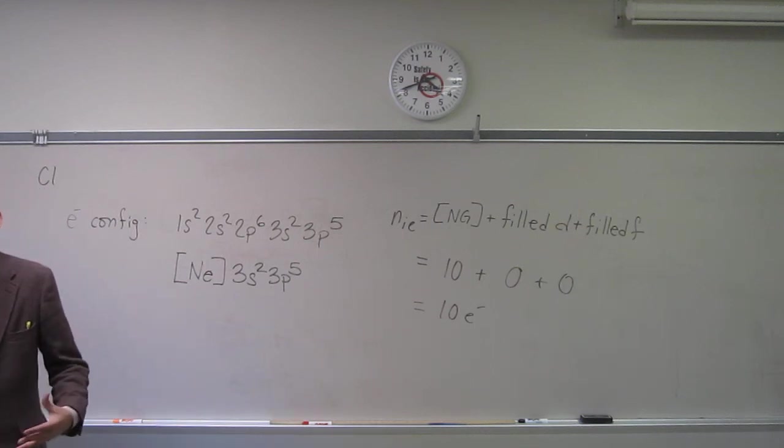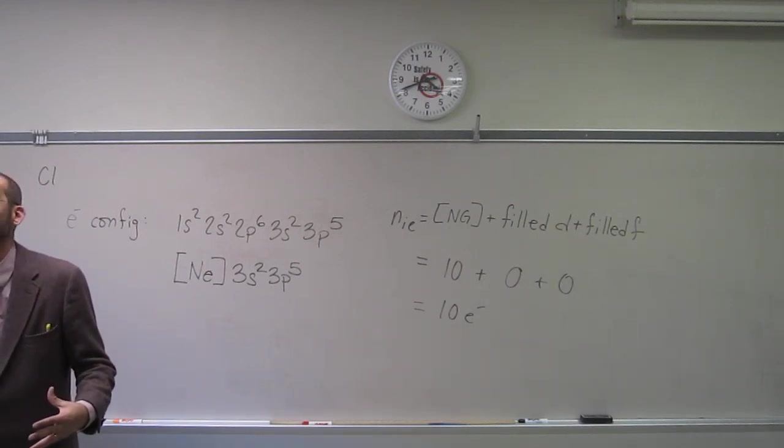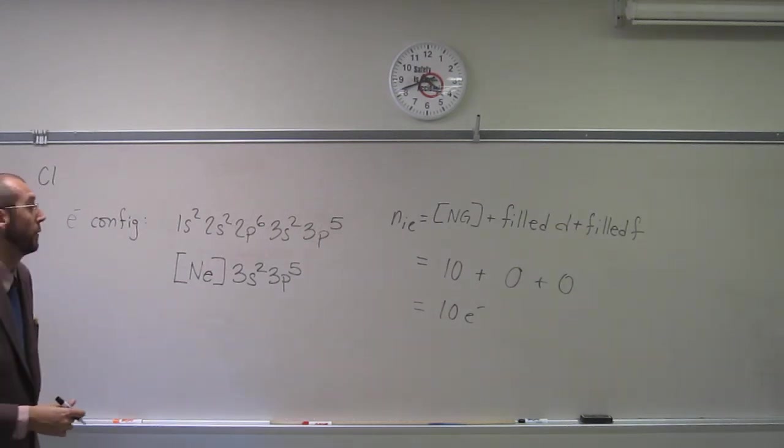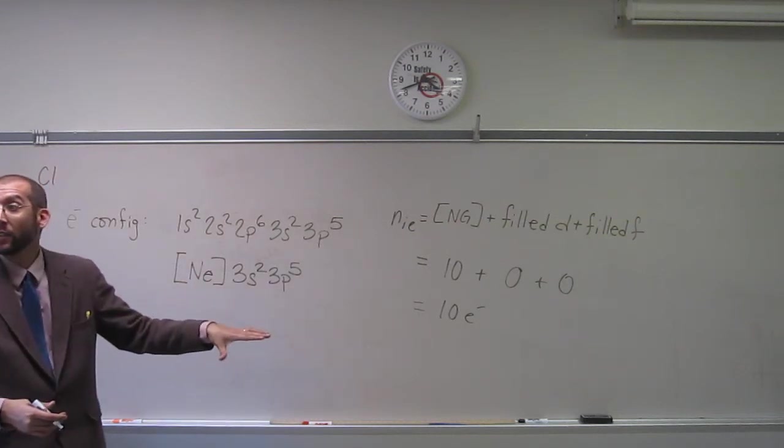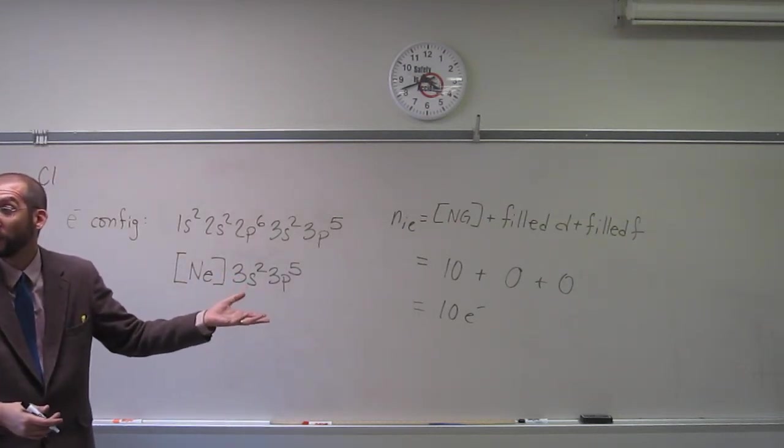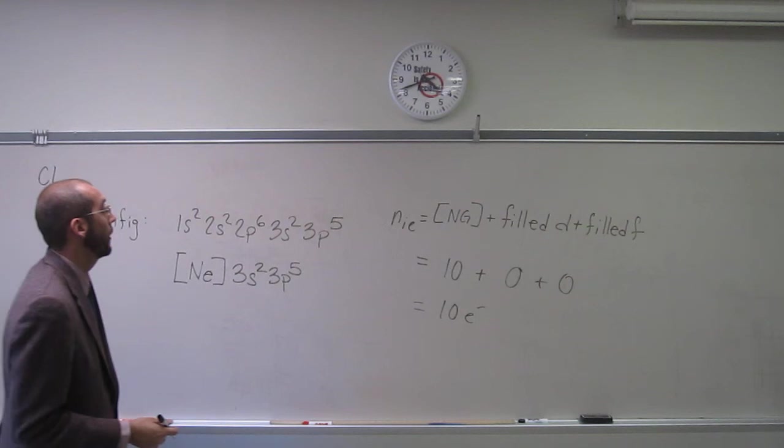So the other ones are the valence electrons. If you wanted to say how many valence electrons, it would be seven valence electrons, right?